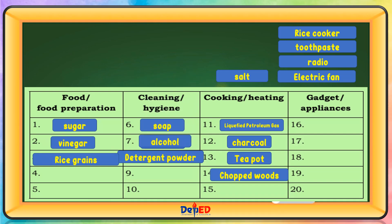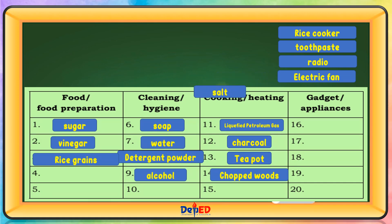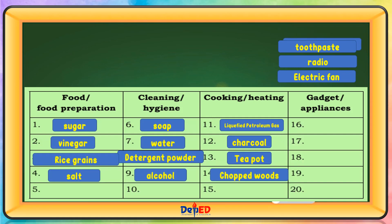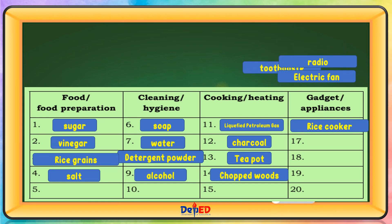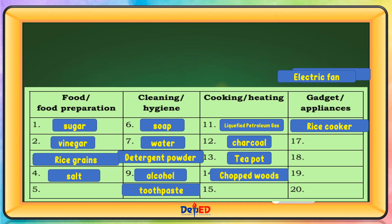Salt is under Food. Rice cooker is under Gadget or Appliances. Toothpaste is under Cleaning or Hygiene. Radio is under Gadget or Appliances. Electric fan is under Gadget or Appliances.